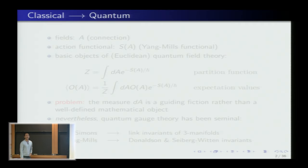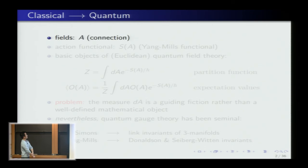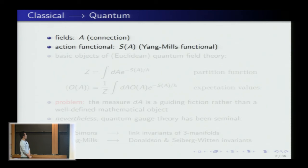Let me begin with a very quick overview of classical to quantum, since I'll be talking about quantum Yang-Mills theory. In classical physics, one has a space of fields. For gauge theories, one has a connection A — that's your basic field. One also has an action functional, say the Yang-Mills functional. Classical physics studies the Euler-Lagrange equations for that functional.